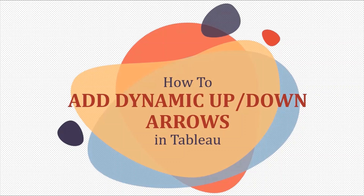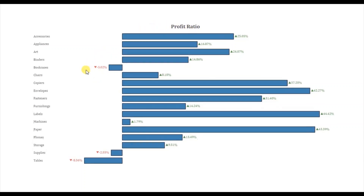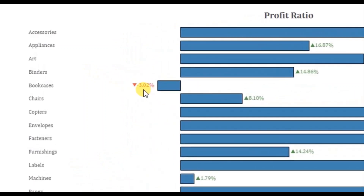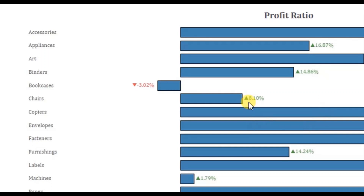In today's session we will see how to add dynamic up down arrows in Tableau. Here I have a bar chart showing profit ratio of different subcategories. Profit ratio is basically sum of profit divided by sum of sales. Whenever the profit ratio is negative, we are getting a down arrow with the label and the down arrow both displayed in red.